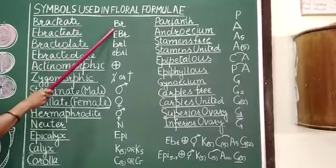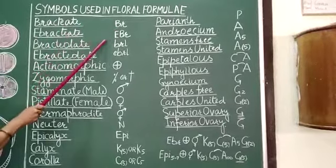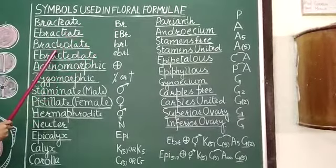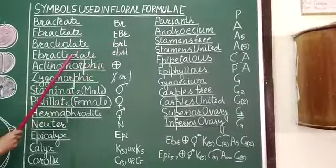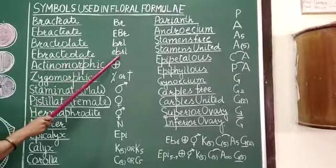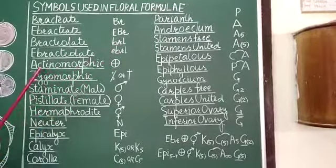Bractiate flower is represented by Br, Ebractiate by EBr, Bracteolate by small brl, Ebracteolate by small ebrl, etc.